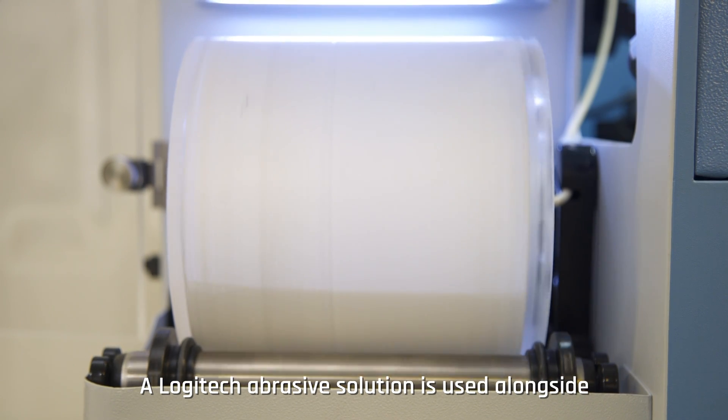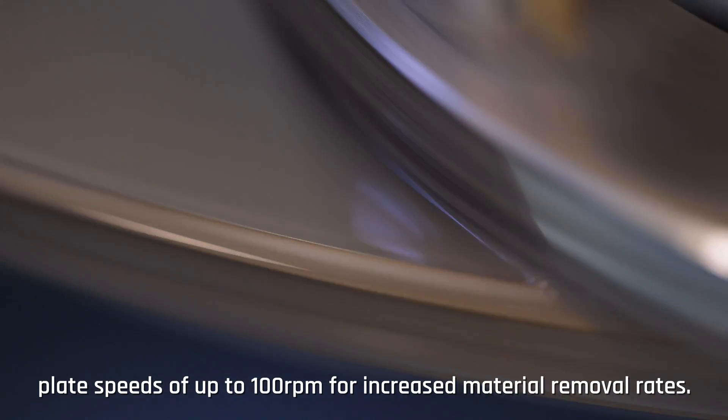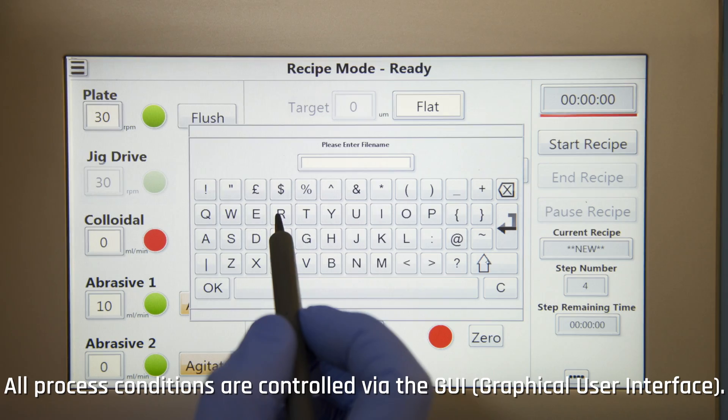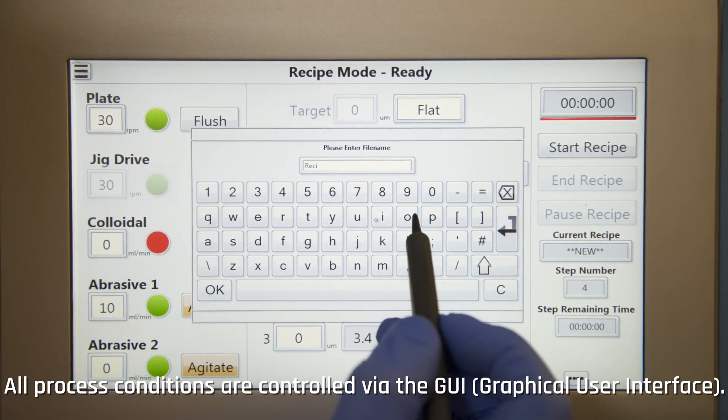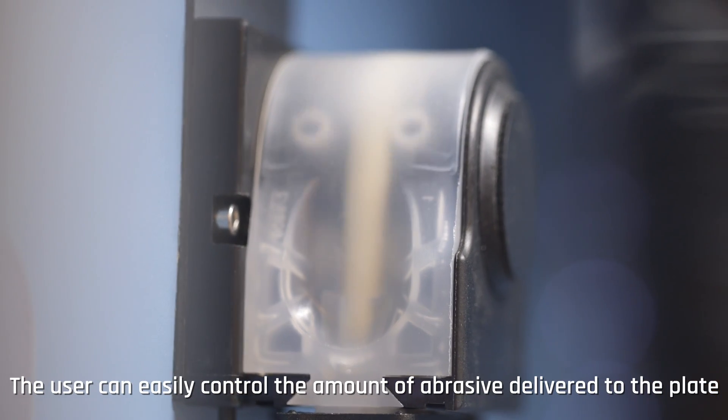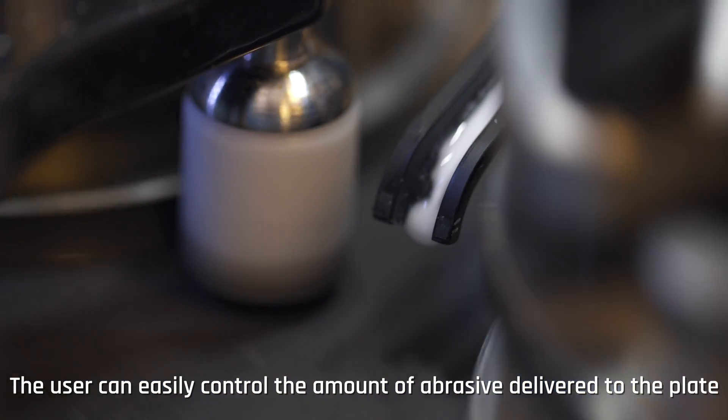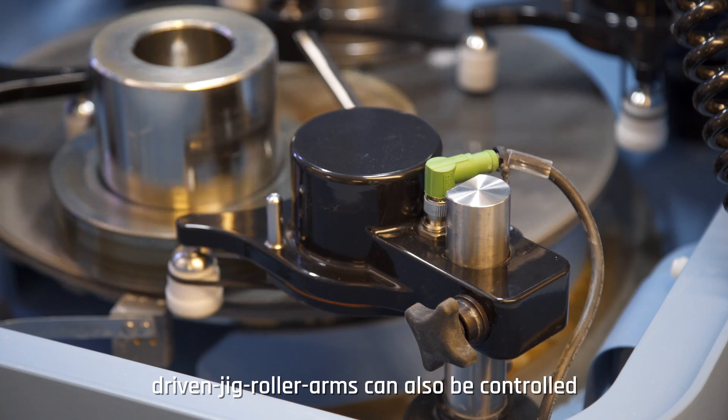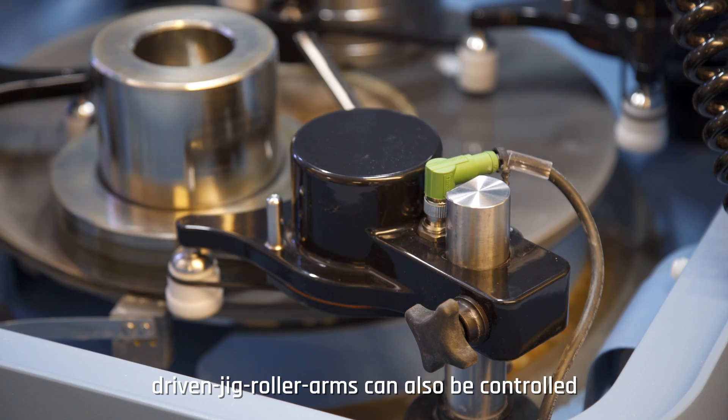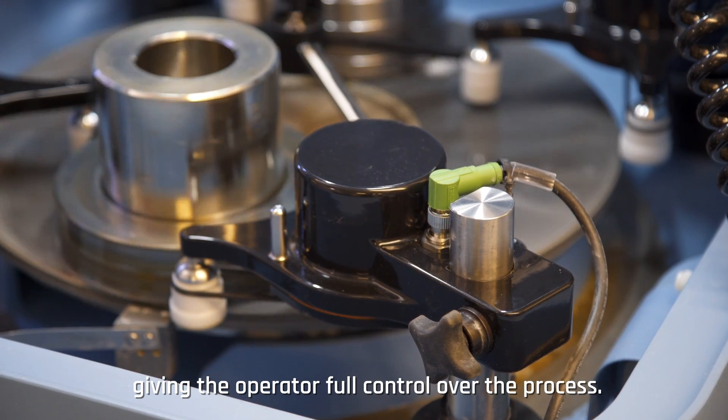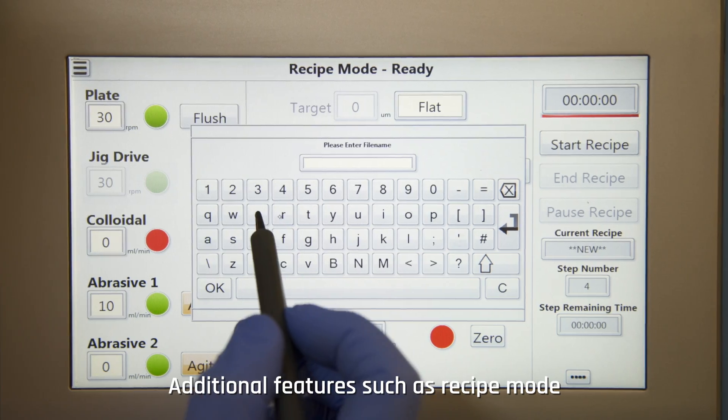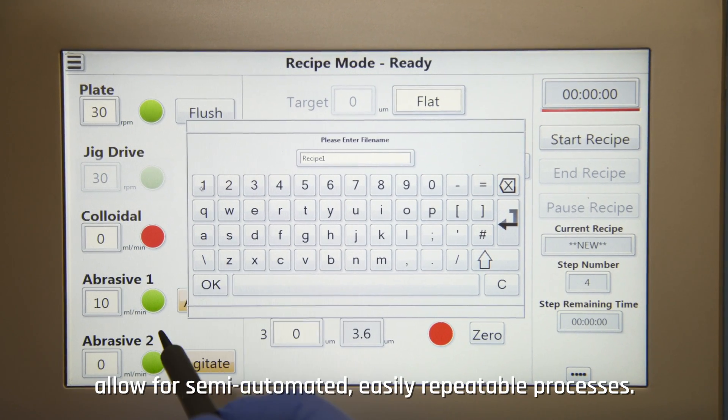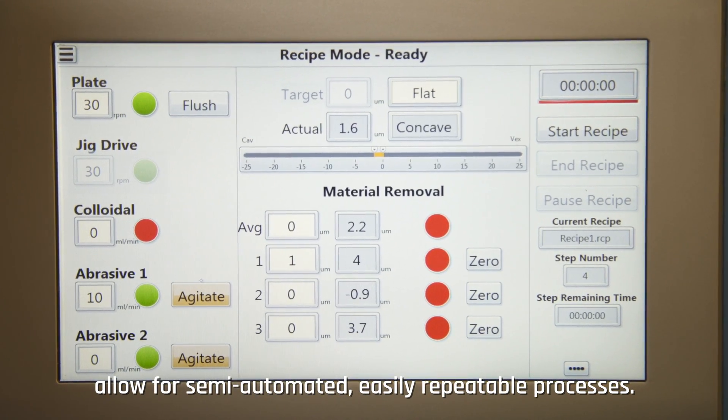A Logitech abrasive solution is used alongside plate speeds of up to 100 rpm for increased material removal rates. All process conditions are controlled via the GUI. The user can easily control the amount of abrasive delivered to the plate via the metered abrasive feed unit. Driven jig roller arms can also be controlled, giving the operator full control over the process. Additional features such as recipe mode and automatic plate flatness control allow for semi-automated, easily repeatable processes.